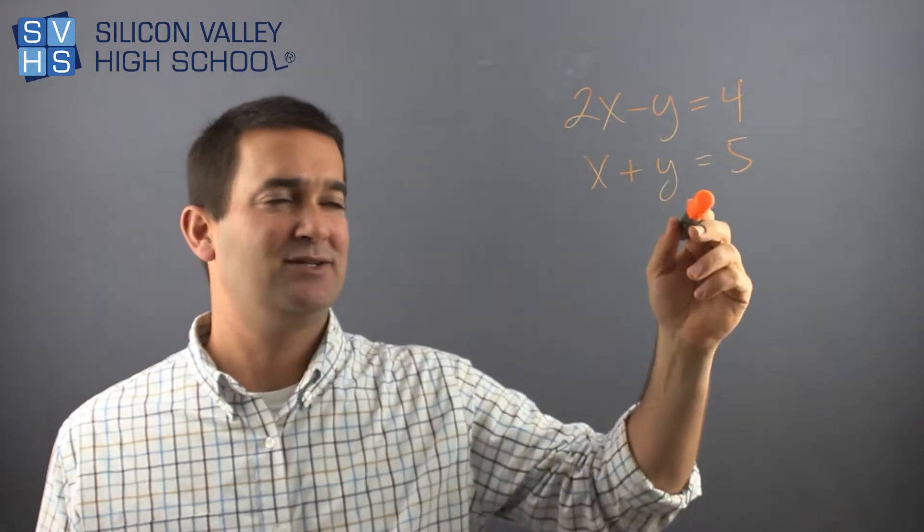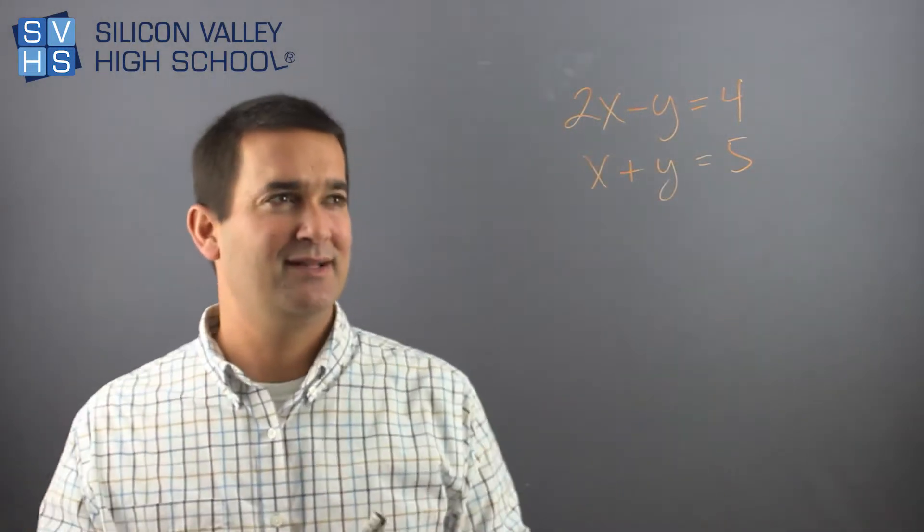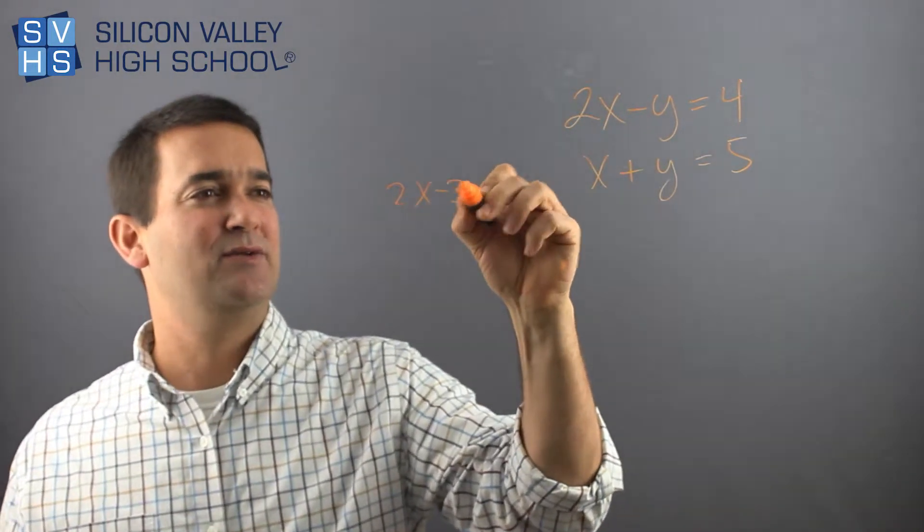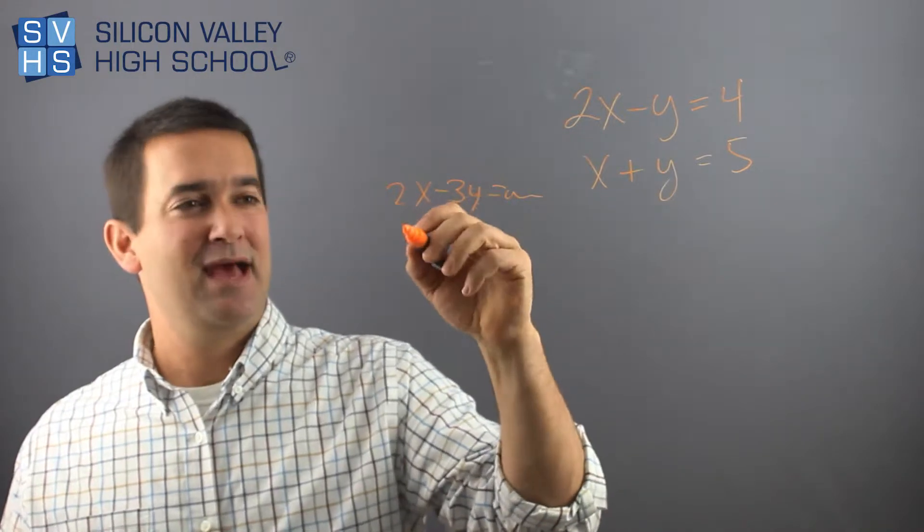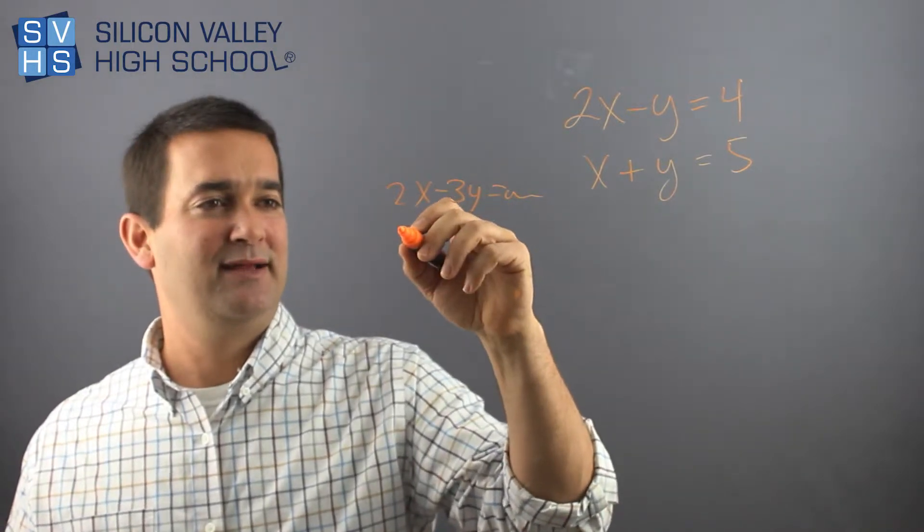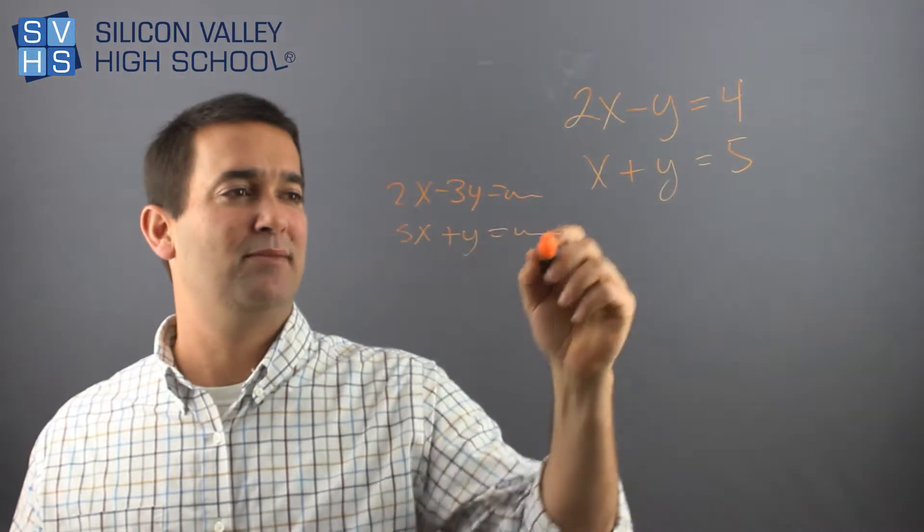A lot of times they won't cancel and you'll have to manipulate one or the other. Like, just an example, if you had 2X minus 3Y equals something, and maybe you had like 5X plus Y equals something.